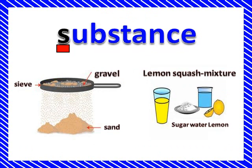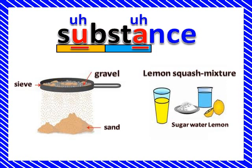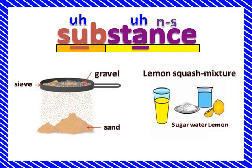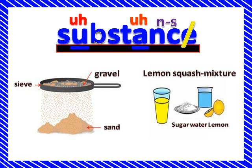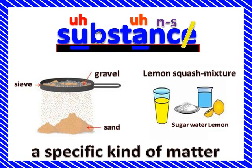Substance is a specific kind of matter. Like you see the gravel — rocks in the dirt — and you shake it through the sieve and you get the dirt out and keep the rocks on top. Over there you've got lemon squash mix: sugar, water, and lemon. Sugar is a substance, water is a substance, and lemon is a substance. You mix them together and you get lemonade.